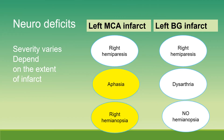Neurological deficits: left MCA infarct causes right hemiparesis, aphasia, and right hemianopsia. Left basal ganglia infarct causes right hemiparesis, slurred speech or dysarthria, but no hemianopsia.